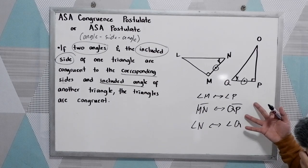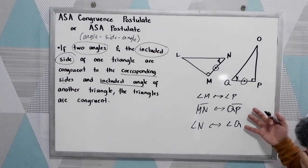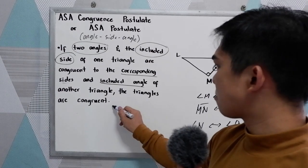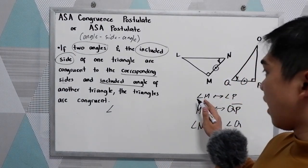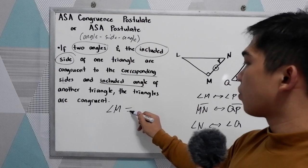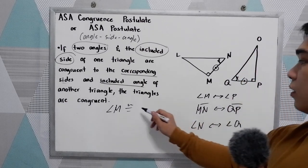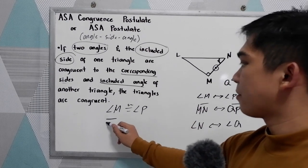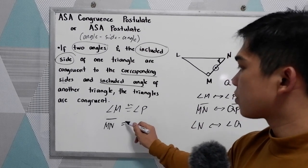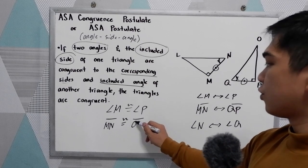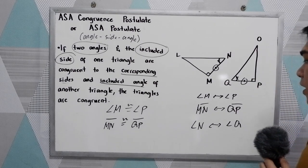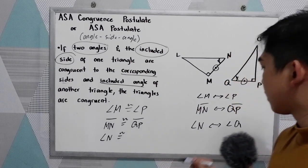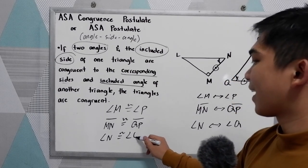After getting the corresponding parts of the triangle, we can now state our congruence statements: angle M is congruent to angle P, segment MN is congruent to segment QP, and angle N is congruent to angle Q.